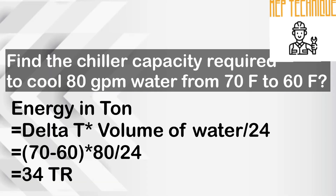Now we will calculate the chiller capacity. The question is: find the chiller capacity required to cool 80 GPM water from 70 degree Fahrenheit to 60 degree Fahrenheit. We apply the same formula. Our delta temperature will be the difference between 70 and 60, and the water volume is 80 GPM. The value is 34 TR.